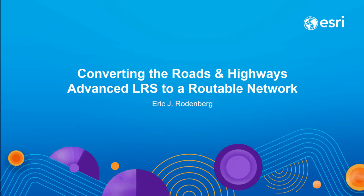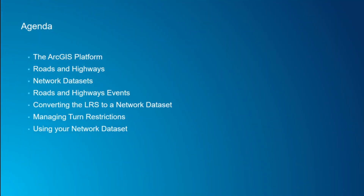Today I'm going to be talking about converting the Roads and Highways advanced LRS to a routable network for network analysts. I'll talk about the ArcGIS platform and where Roads and Highways fits, a brief overview of Roads and Highways, and a brief overview of network datasets. I'll cover how to manage your events to go into the network dataset, the process of converting the LRS to a network dataset, and how you would manage turn restrictions. At the end, I'll show how to use the network once it's been created.